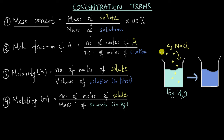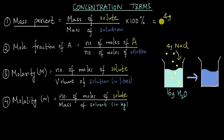I keep forgetting these words, that's why I have color coded them here for my convenience. So this NaCl is the solute. To calculate the mass percent, I have 4 grams of NaCl — that is the mass of solute divided by the mass of solution.